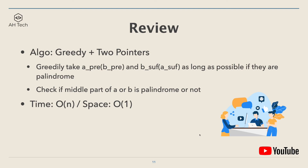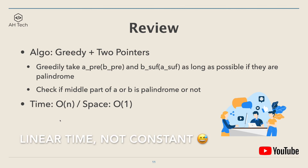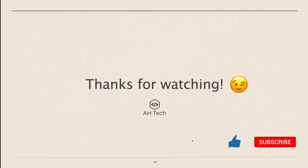To review: because of the data size, the brute force naive approach doesn't work. We use a greedy algorithm with two pointers — greedily taking A-prefix and B-suffix, or B-prefix and A-suffix as long as possible while they are palindrome, then checking if the middle part of A or B is a palindrome. The time complexity is O(n) and the space complexity is O(1) since we are not using any additional data structures. Thanks for watching — if you like this video, please give it a like and subscribe to my channel.